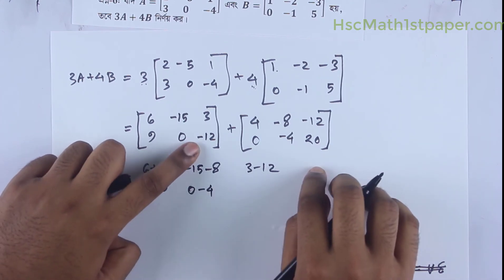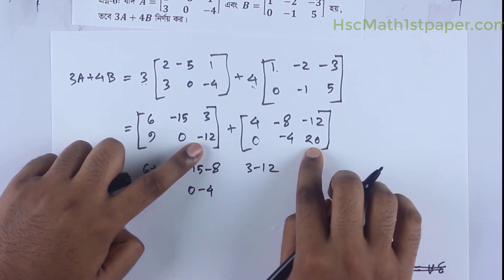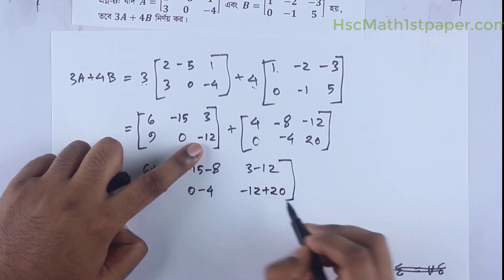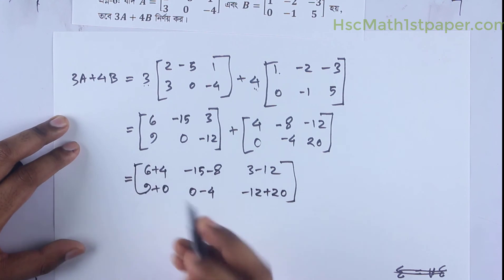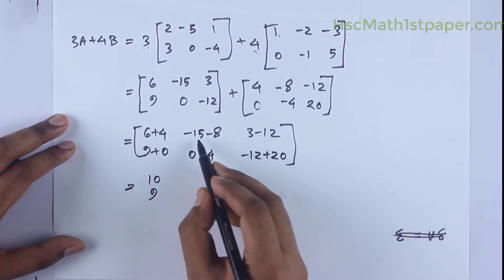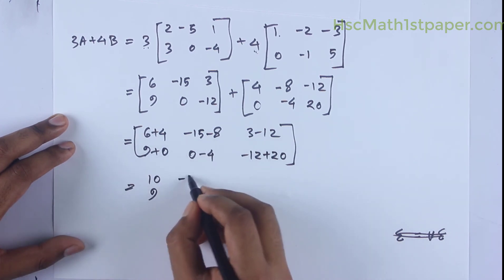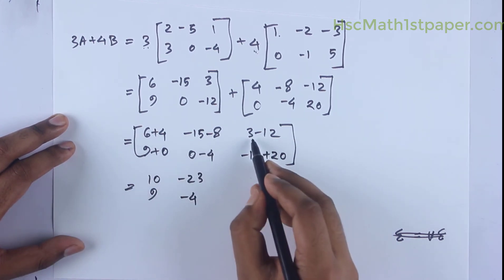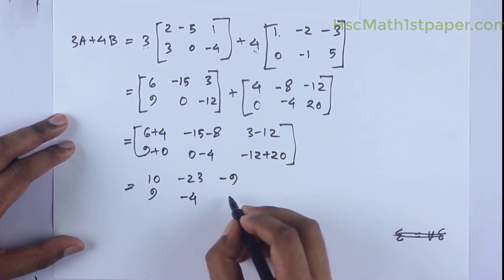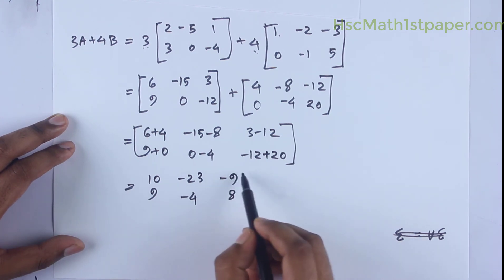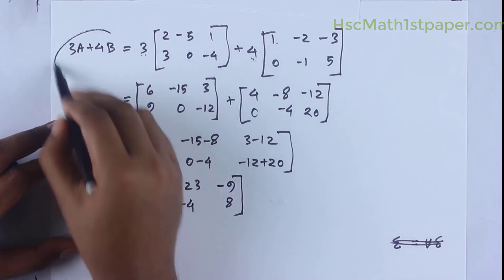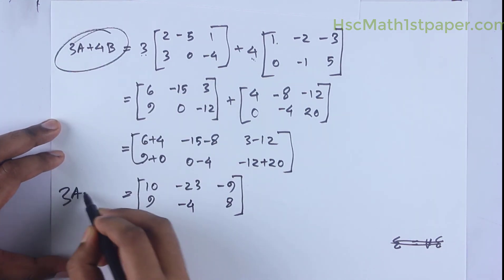Minus 4, minus 12, minus 12 plus 20. Here is the same thing — we will keep the same thing, we will add the same thing: here is 6 plus 4 minus 12, minus 1, minus 4. Minus 12 minus 9, minus 12 plus 20 is equal to 8. This is 2a plus 4b. We will start using this — at least 3a plus 4b.